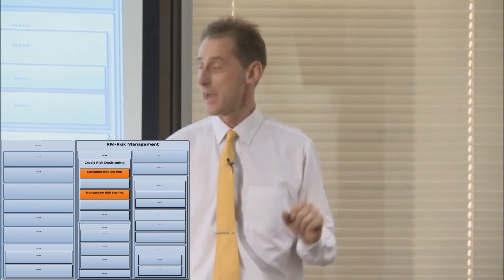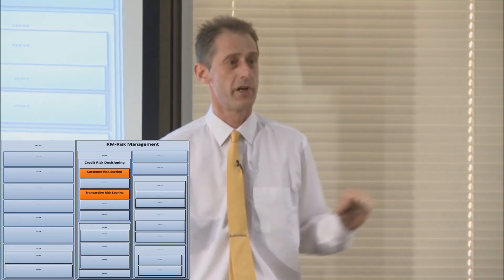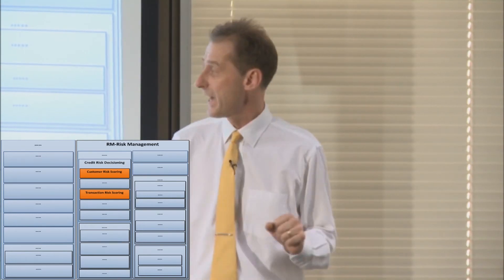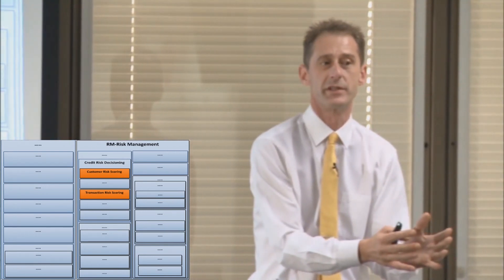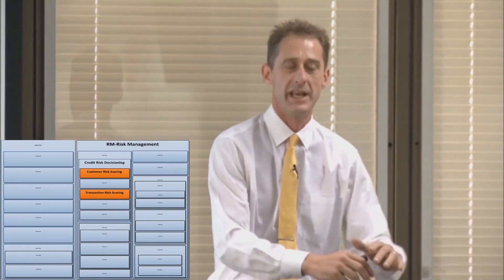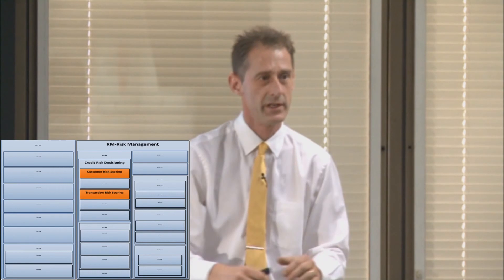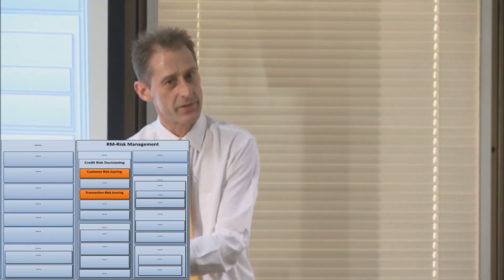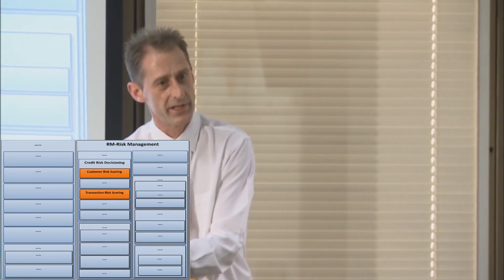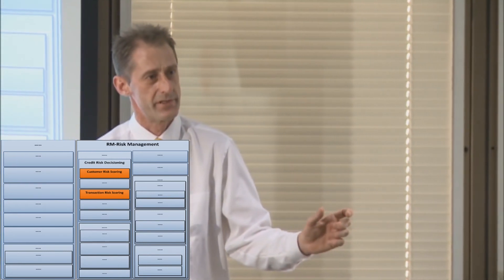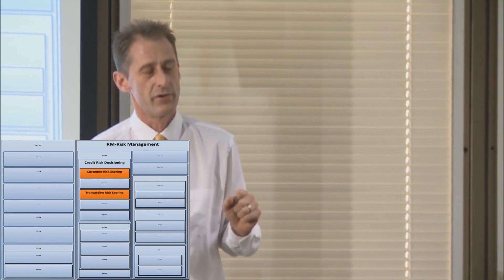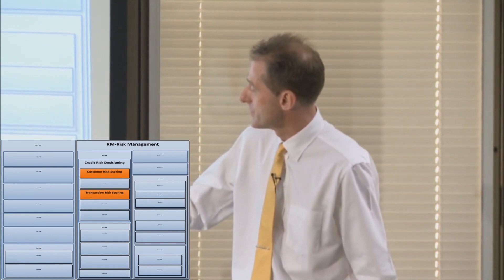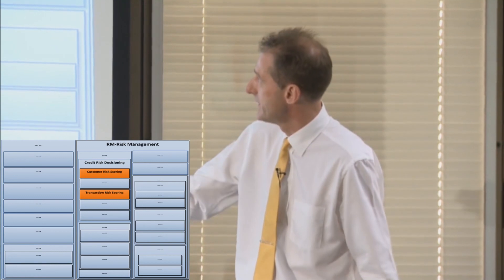Not only are you getting customer risk score being used across the whole company, but transaction risk score can now be used within each individual business unit. The transaction risk scoring gets lots of reuse inside mortgages, and the margin lending version gets lots of reuse inside margin lending, but they won't be reused across business units because they're fundamentally different concepts. That forces the service containers to be down at that level.